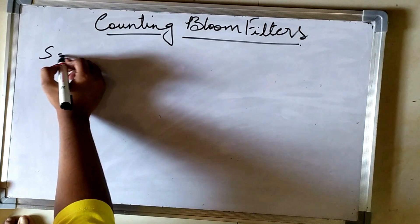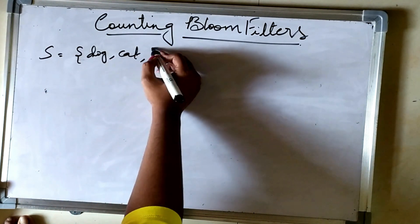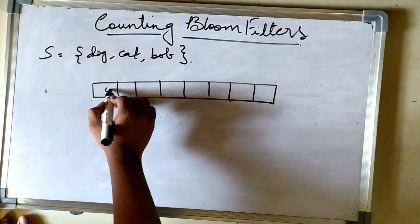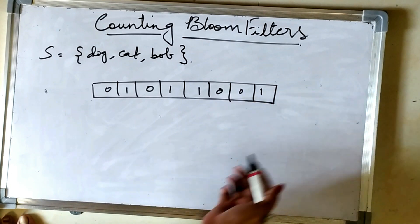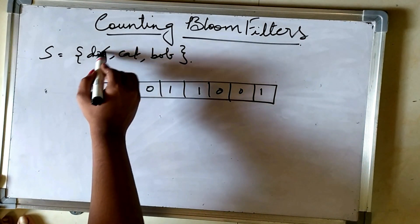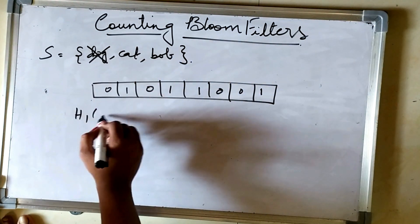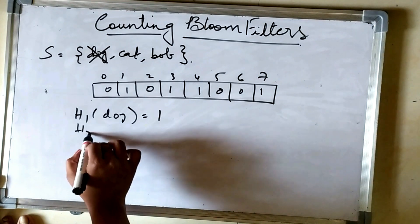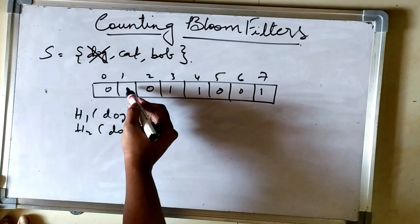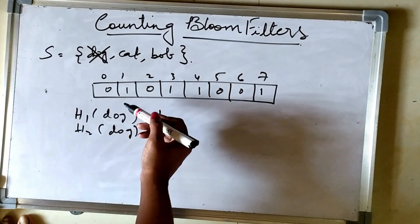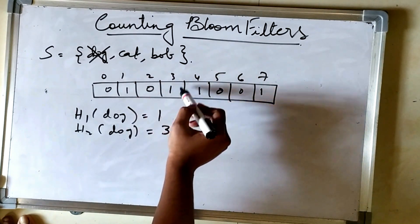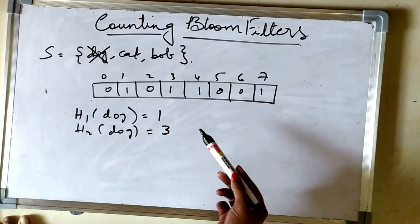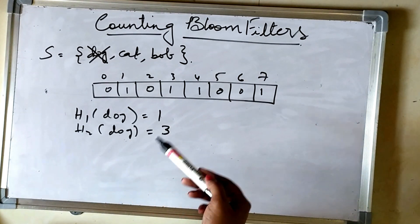Now let's see what counting bloom filters are and why they are needed. Say we have a set containing 'dog' and 'cat', with a corresponding bloom filter. If the element 'dog' should be removed from set S — where H1(dog) = 1 and H2(dog) = 3 — we cannot simply set those bits back to zero, because some other element's hash functions could have set those same indexes, and zeroing them would falsely indicate those elements are also absent. This is where the standard bloom filter falls short, and where the counting bloom filter comes into picture.